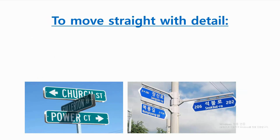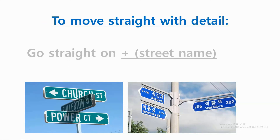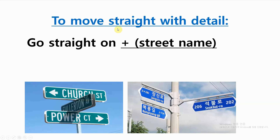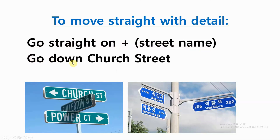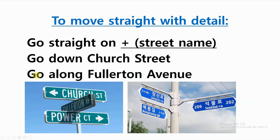To move straight with detail, we can say: go straight on and add a street name. For example, go down Church Street, or go along Fullerton Avenue.